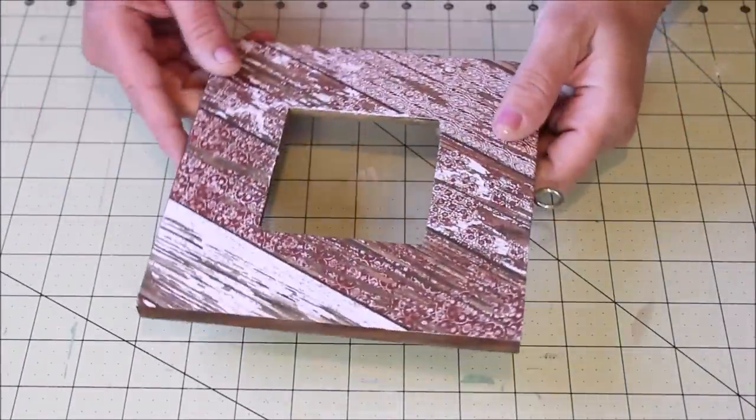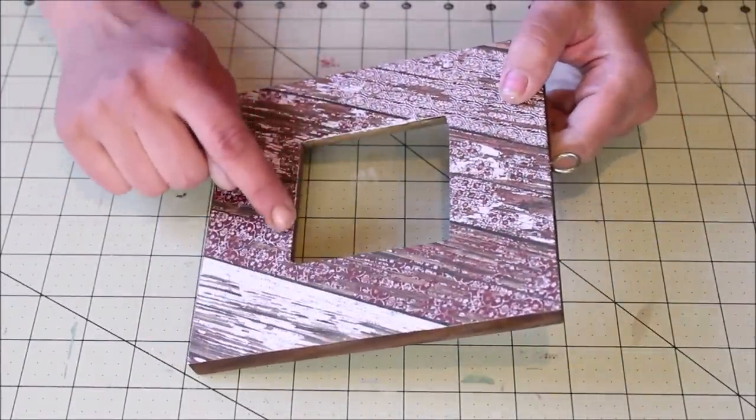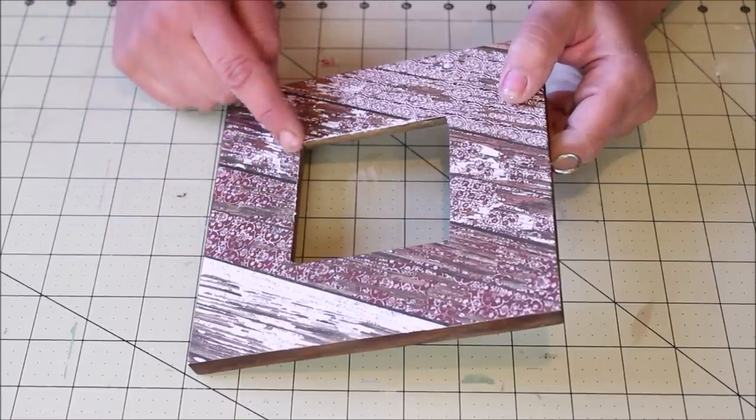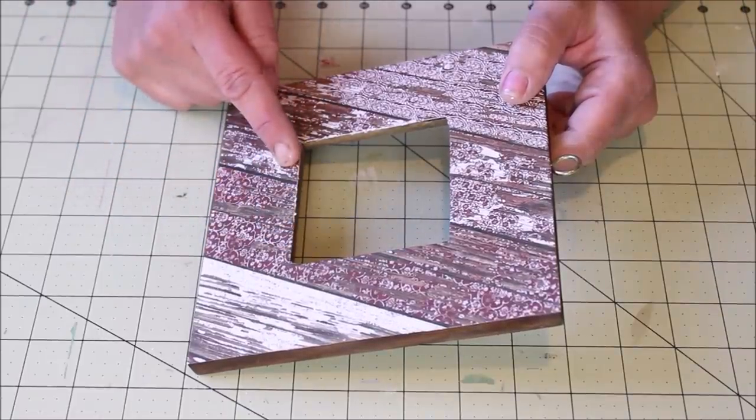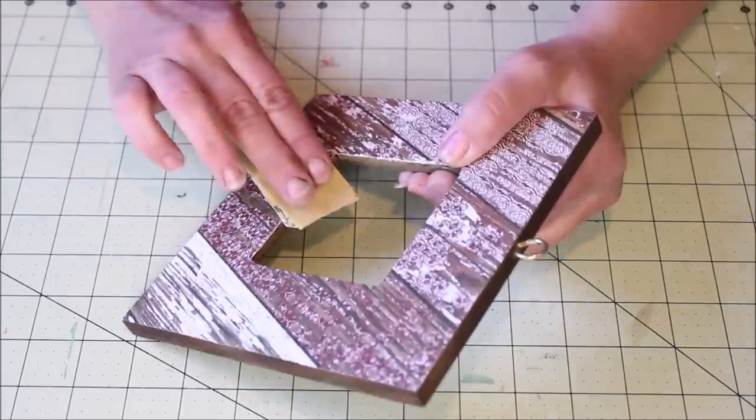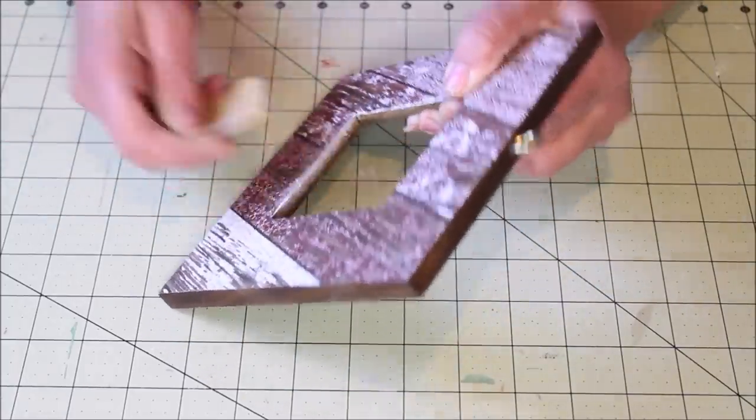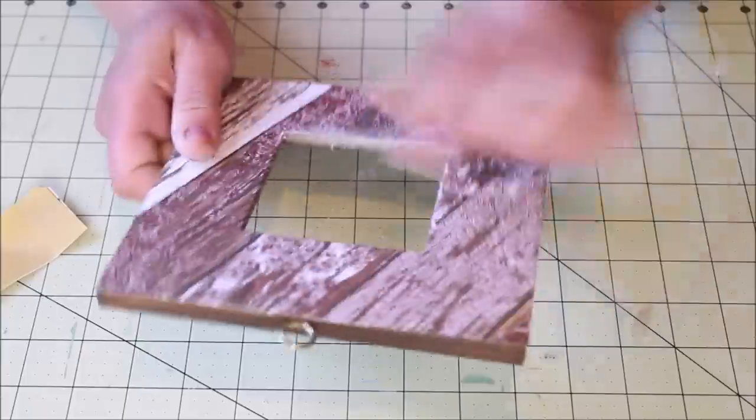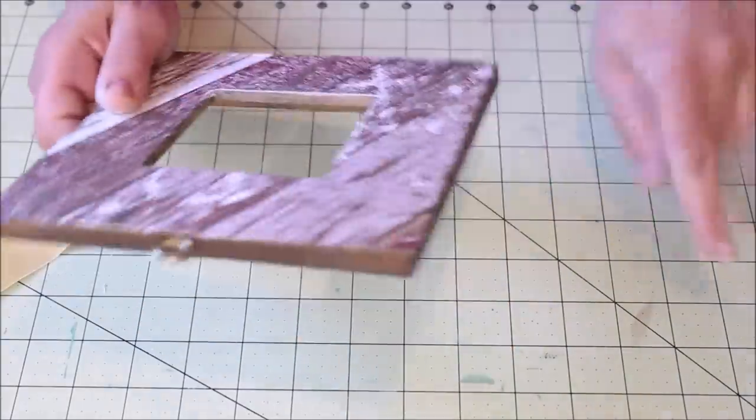Once the frame had time to dry completely, I wanted to work on this overlap that I had around the inside of the frame. So I took a little piece of sandpaper and lightly sanded along the edge to remove that little piece of overlapping paper.